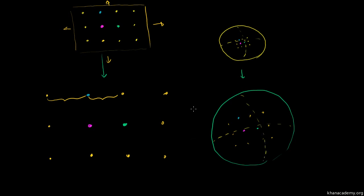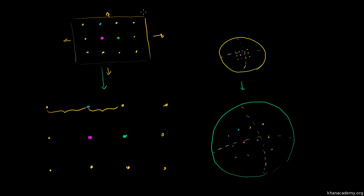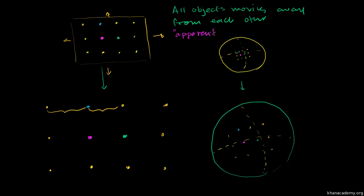Now let's think about what is the apparent velocity with which things are moving away. We're going to say how far they're moving away from us as the observer, depending on how far they already are. All objects are moving away from each other, and the apparent relative velocity is proportional to distance. What I've just written down here is essentially a rephrasing of Hubble's Law.